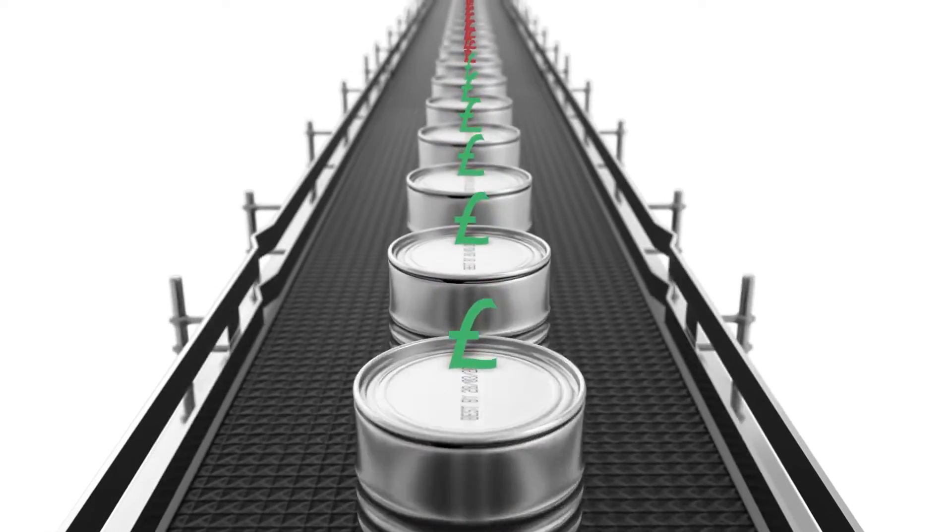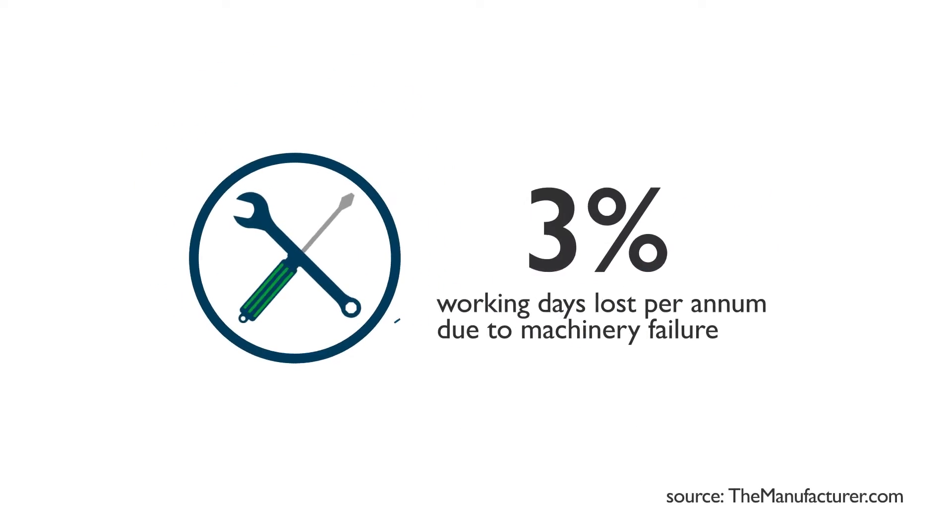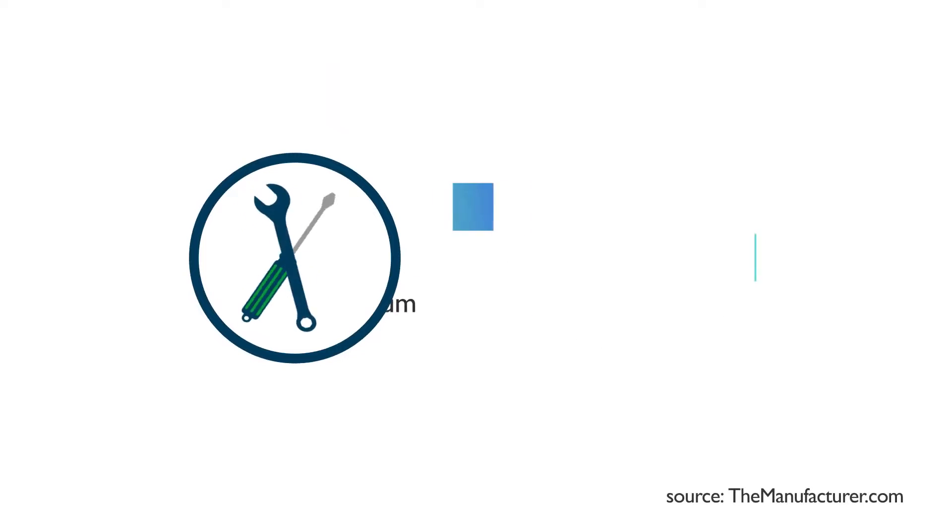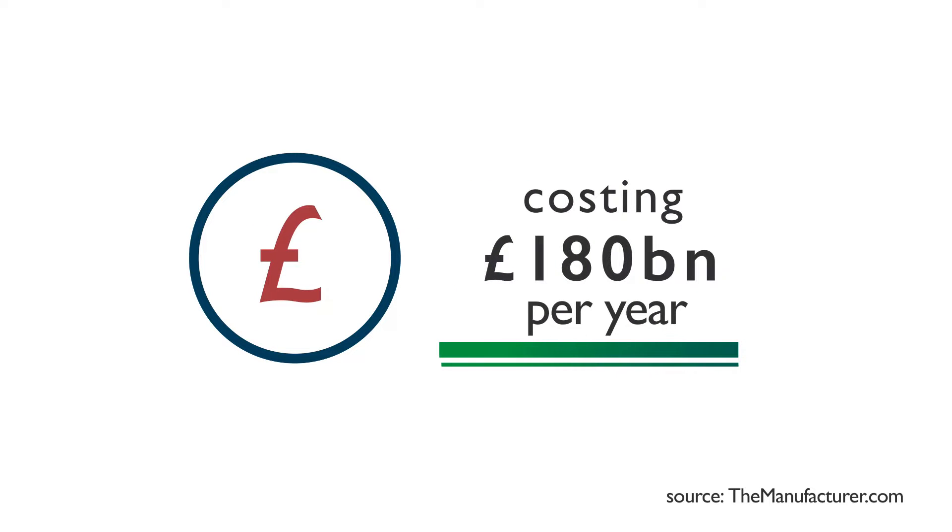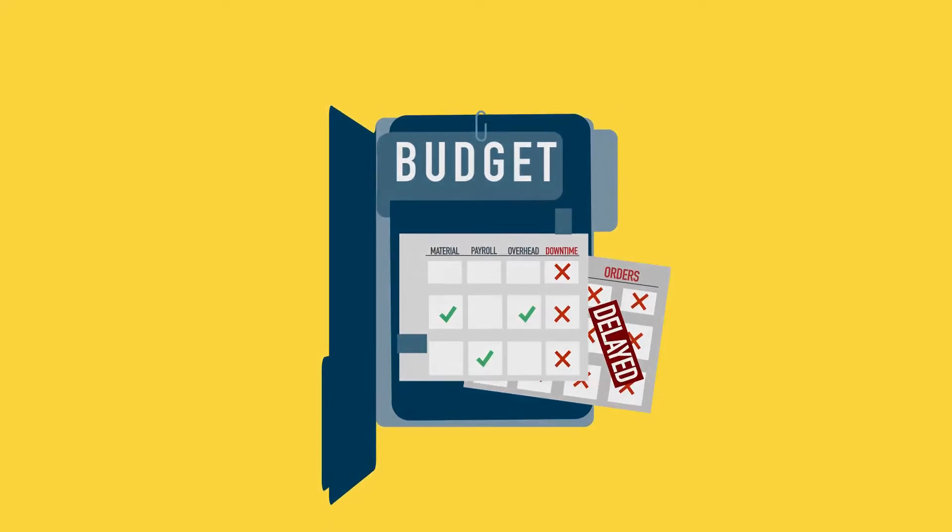Downtime. The word strikes fear and frustration across all production lines. With failed machinery accounting for 3% of lost working days per annum, costing British manufacturers in excess of £180 billion per year. Who sets aside budget for unexpected downtime and delayed orders? Or wants to run extra shifts?